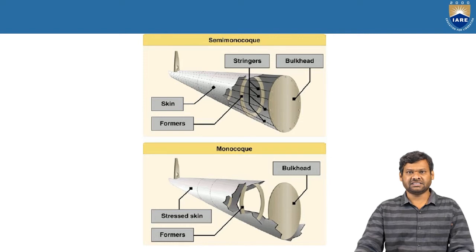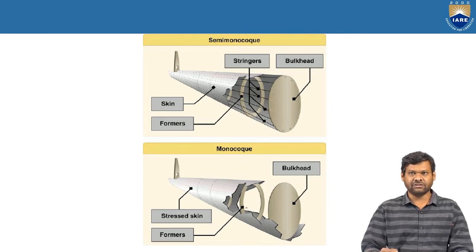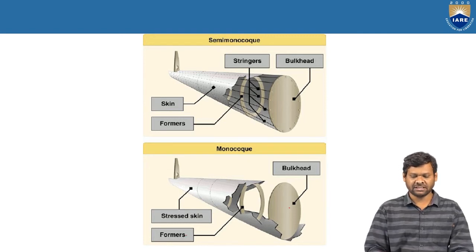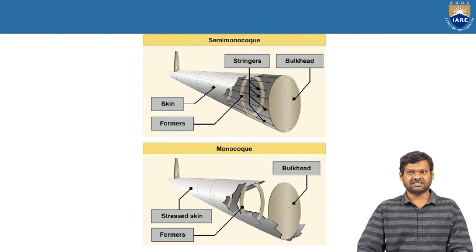The other type of construction is called monocoque, and we also have another type called semi-monocoque. In monocoque structures, we have bulkheads, formers, and a skin — these are the three important members used. The load applied on the skin is carried by the bulkheads and formers. In semi-monocoque structures, we additionally have stringers running from one bulkhead to another, and longerons, which are the longest beams running from one end of the fuselage structure to the other.